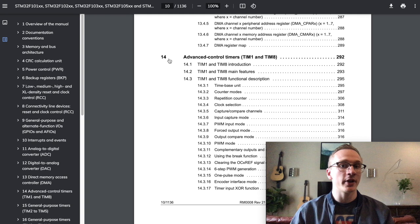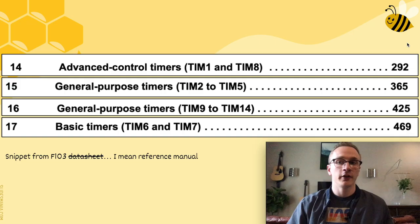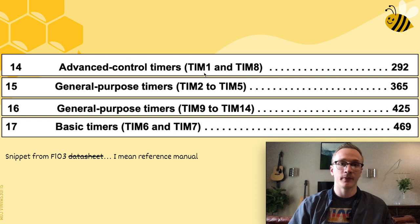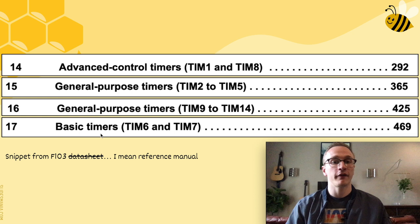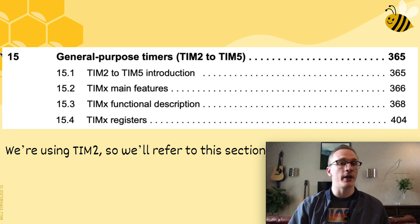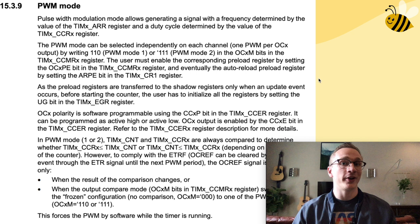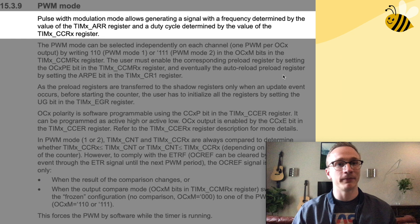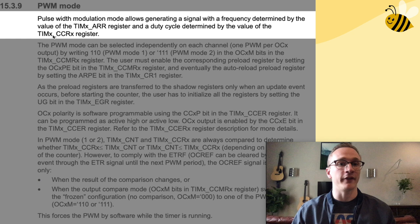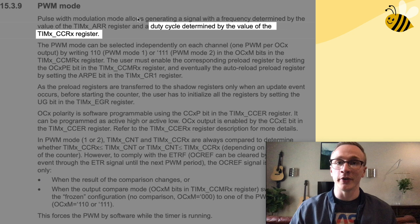Timer documentation starts at chapter 14, and there are different rules depending on which timers we're using. For the Blue Pill there are four timer sections: one for advanced control timers, two for general purpose timers, and one for basic timers. We're generating PWM using timer 2, so we want chapter 15, which describes general purpose timers including timer 2. If we keep looking through the table of contents, we can find a section on PWM mode: section 15.3.9. Right away in the first sentence it tells us that PWM mode allows us to generate a signal with a frequency determined by the TIMx_ARR register and a duty cycle determined by the value of the TIMx_CCRx register. So we're trying to change the duty cycle, which means we need the TIMx_CCRx register.